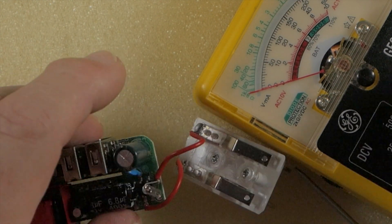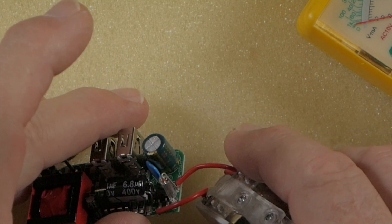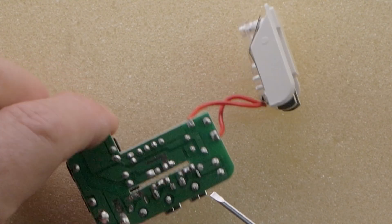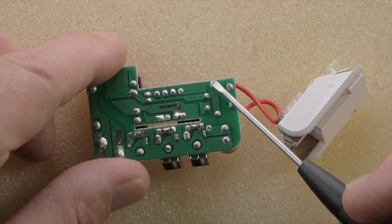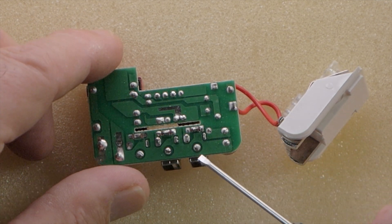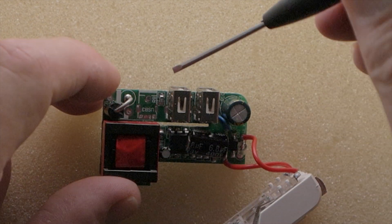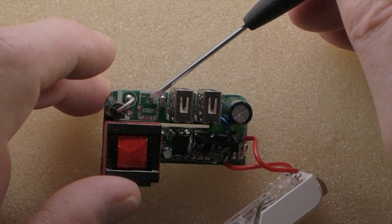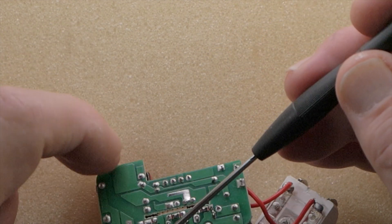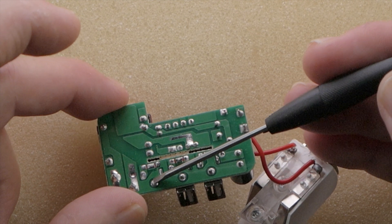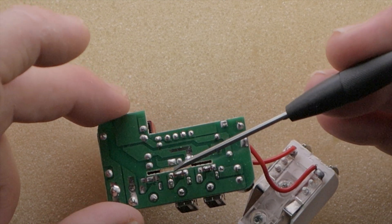This is a double sided circuit board so you have solder connections and foil traces on one side and you also have the same kind of foil traces and solder connections on the other side. There are these feed through connections that feed through between one side of the circuit board and the other.